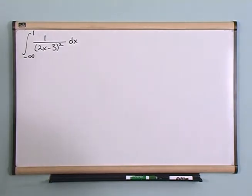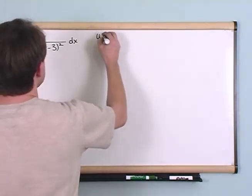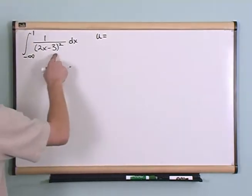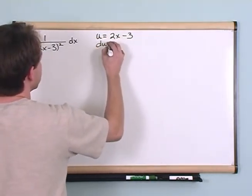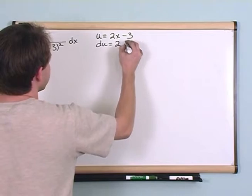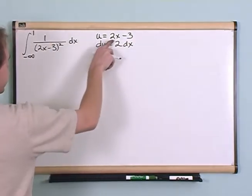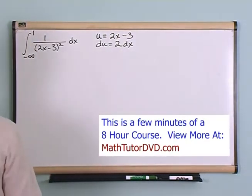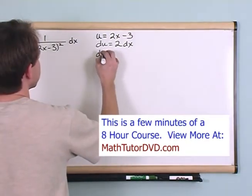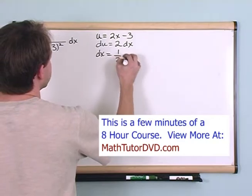Okay, and then we said u is going to be equal to this in the bottom, 2x minus 3, so that du is equal to 2 times dx. du/dx is 2 and then we move the dx over. Okay, so then dx is equal to one-half du.